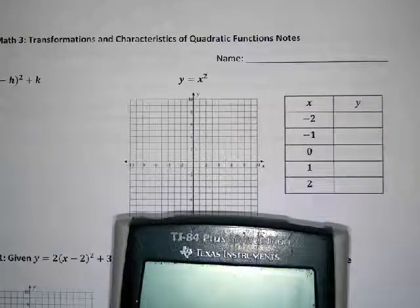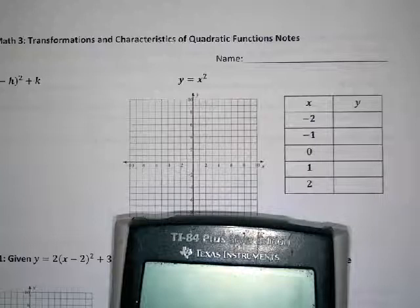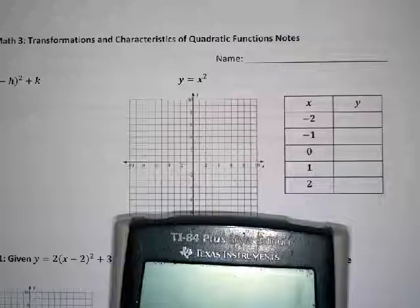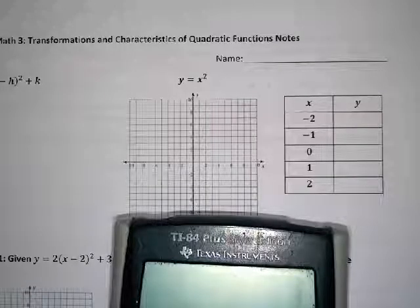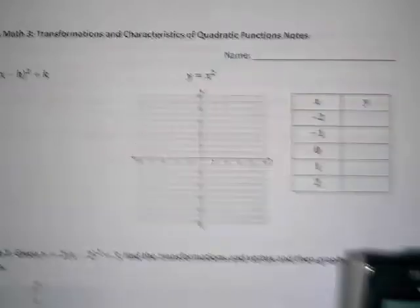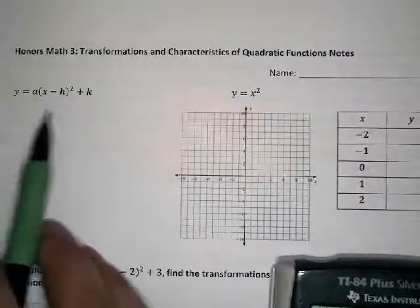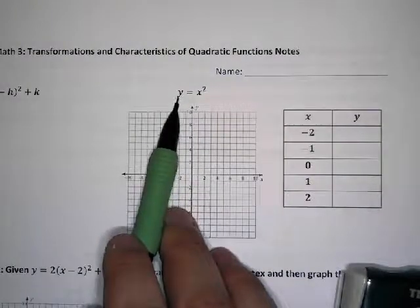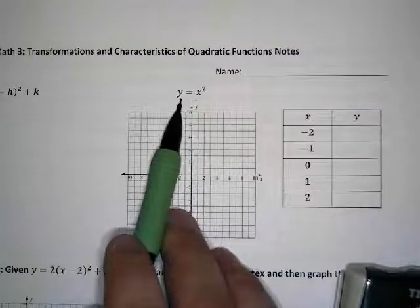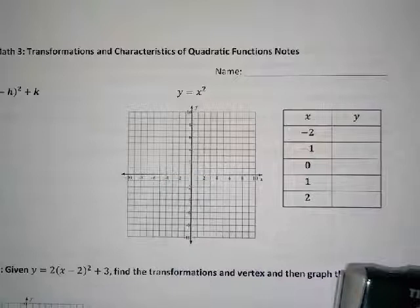We did this with absolute value graphs but this was the day the sub was here, so you've done it before but it's been a little while. Depending on how much you were paying attention, you might have understood it well or not at all. The parent function of a quadratic — the function with no transformations — is y equals x squared. That's the regular version of the graph.